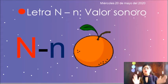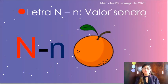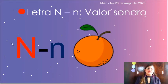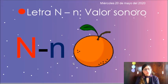Les doy un aplauso porque lo hicieron súper bien. Ahora sí corazones, como les había comentado, en esta ocasión vamos a estar viendo una nueva letra. La letra que tenemos aquí es la letra N. La que está de color rojo es nuestra N mayúscula y la que está en color azul es nuestra N minúscula.